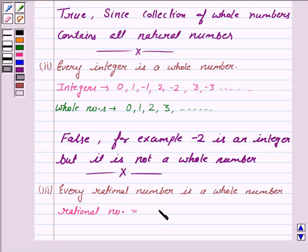Rational numbers are of the form P by Q where P and Q are integers and Q not equal to 0. And the whole numbers are, as we discussed, 0, 1, 2, 3 and so on.